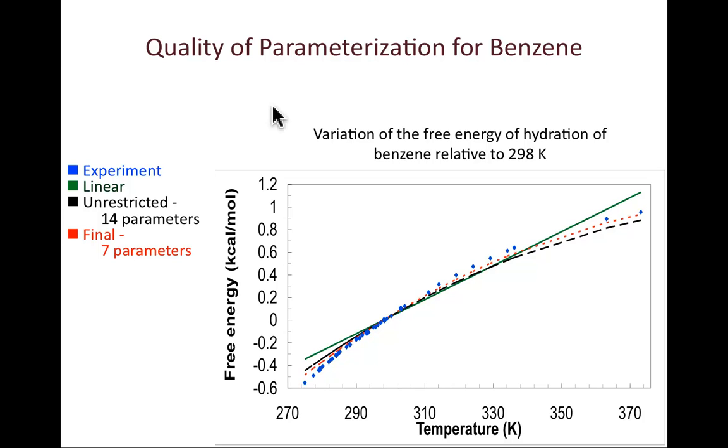The unfortunate thing is there's not a huge amount of data against which to parameterize. And given that it's not terribly sexy to propose to a funding agency that you're going to do a whole lot of Henry's constant measurements at different temperatures, probably to make progress on this, it's going to require some collaboration between people doing high-quality simulations who can look at variations of temperature and using those data to build high-quality continuum models.